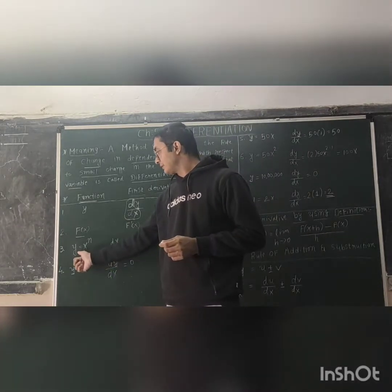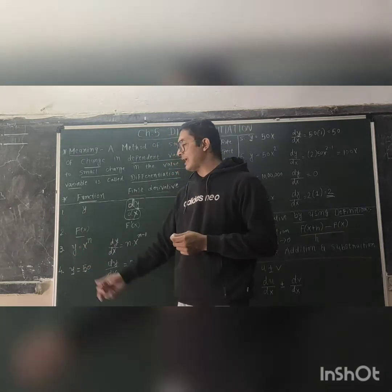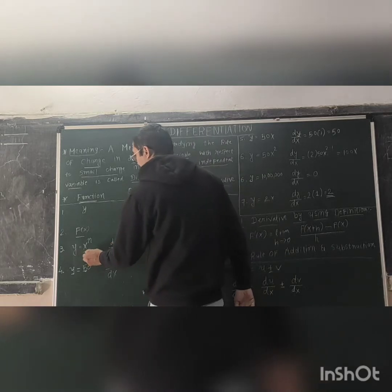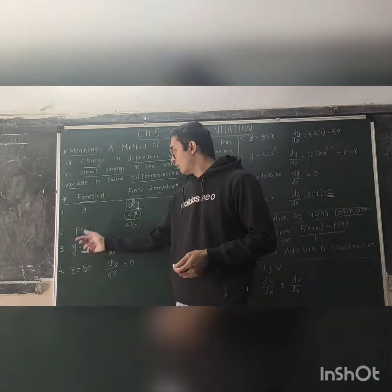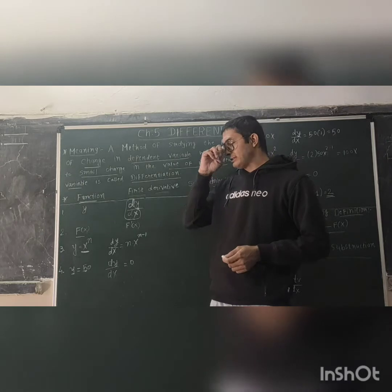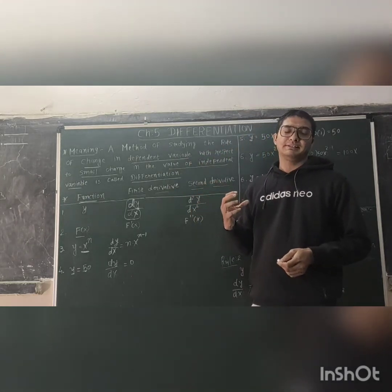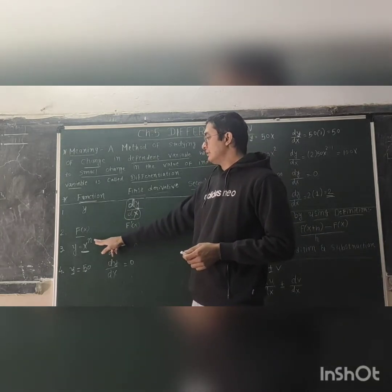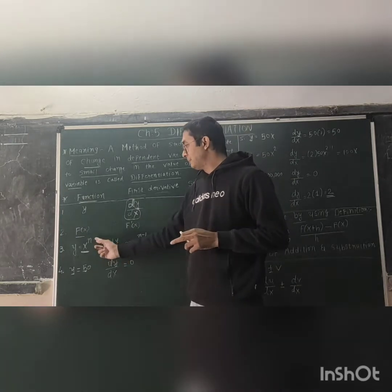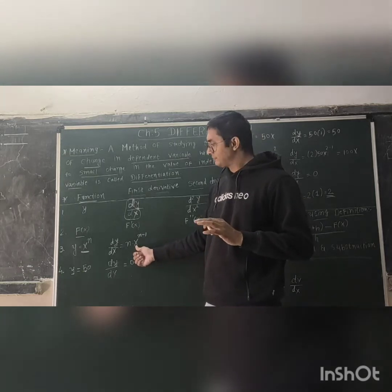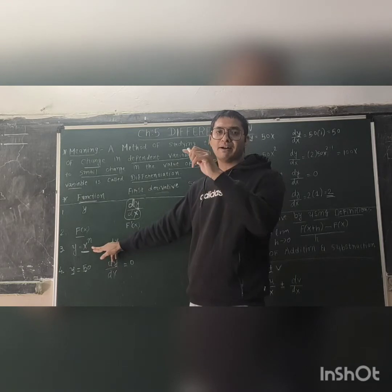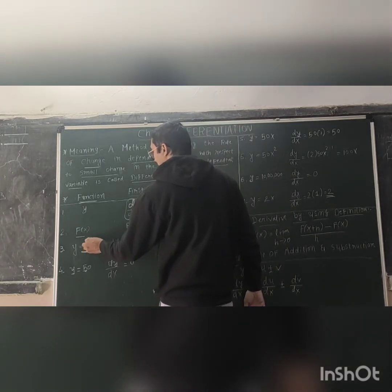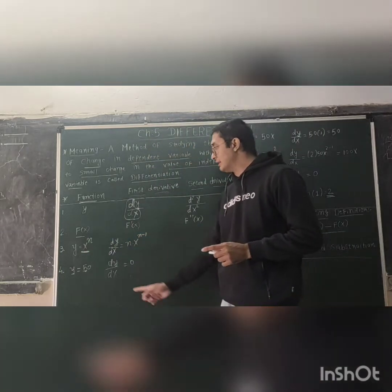Here is a fundamental formula: Y is equal to X raised to N. Y is the original function, and we want to apply the derivative on X^N. The derivative of Y becomes DY upon DX. In this chapter, the main role is for X — it is the main object. So if we have X raised to N, the power N is multiplied by X. The power N comes into multiplication — N into X raised to N minus 1. We reduce 1 from the power as per the formula.